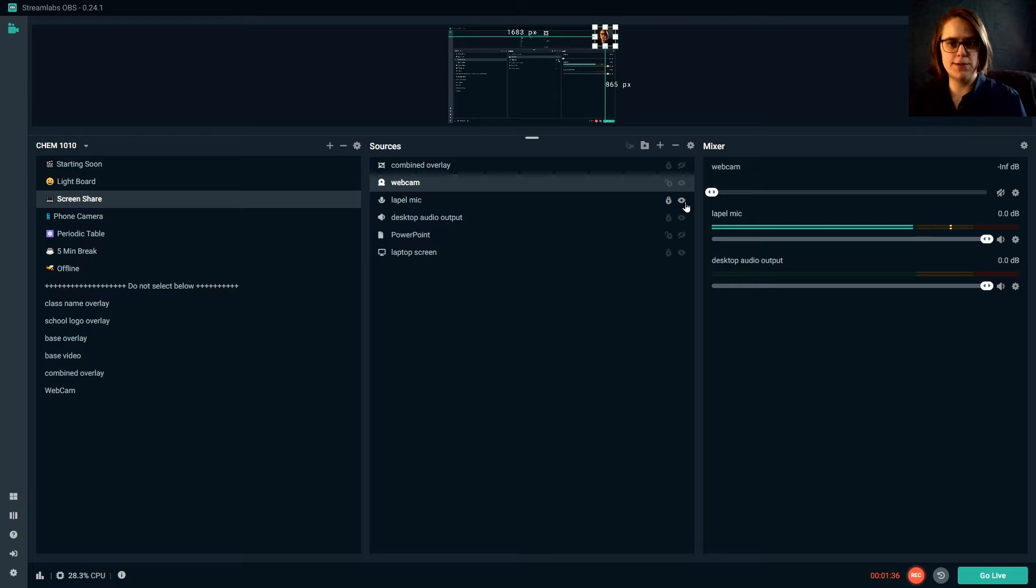Lapel mic, when I turn this off, you won't be able to hear me. This is how I would mute within the screen. Desktop audio output, say I want to show a YouTube video to my class. Turning this off or on, controls whether or not I'm sending students the audio that's coming out of my computer speakers.